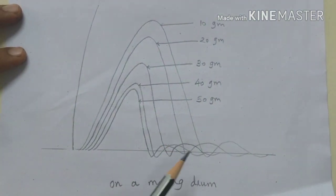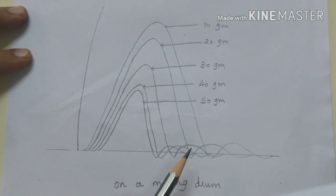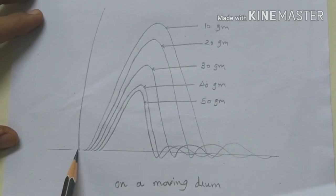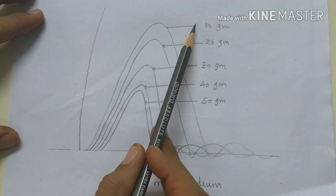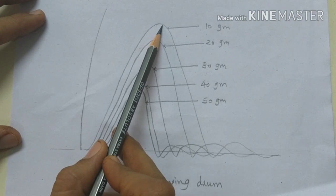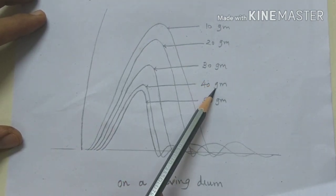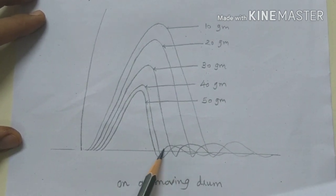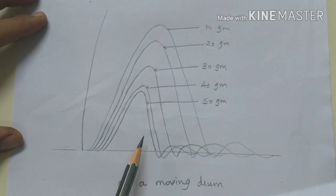Let us discuss the effect of after-loading condition on muscle performance. By this graph you can see that the latent period increases with increase in load. Height of contraction decreases with increase in load. Contraction period as well as relaxation period both decrease with increase in load.